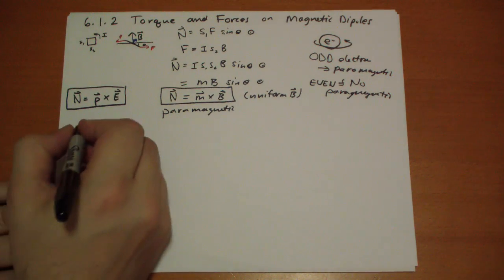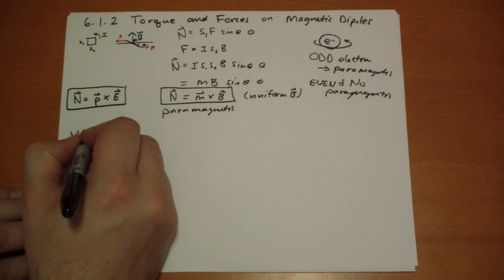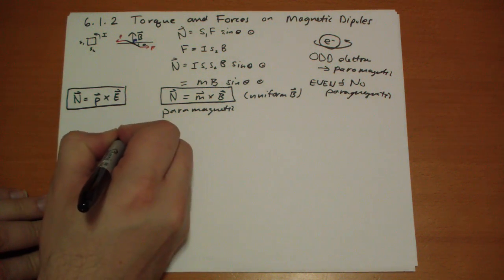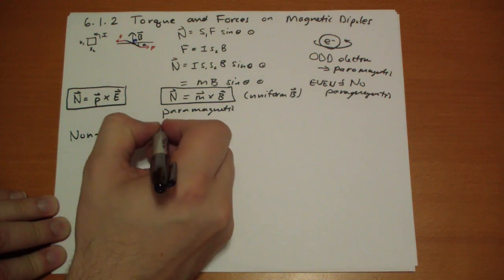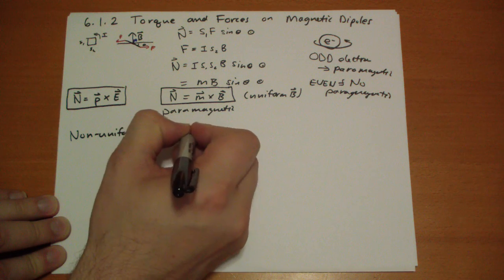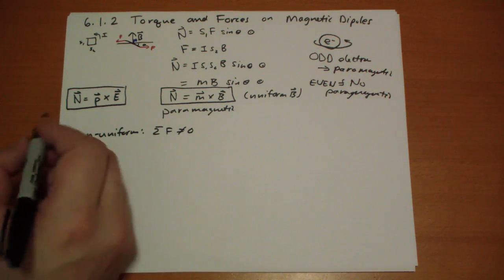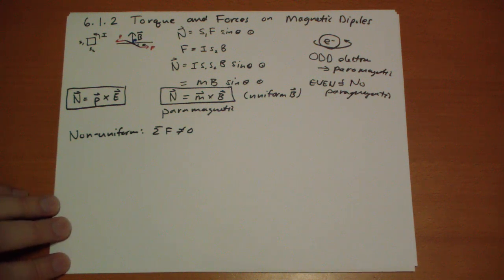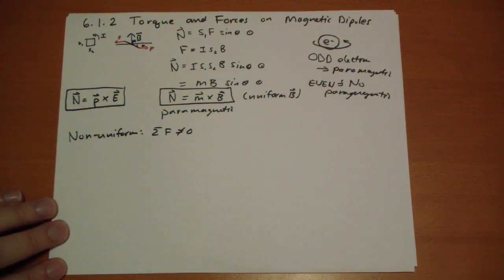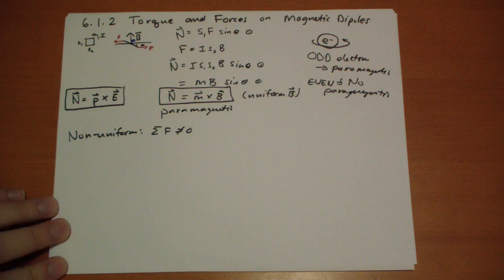Since the field is non-uniform, the sum of the forces is not equal to zero. In uniform fields, the sum of the forces is equal to zero. So in a non-uniform field there's some net acceleration — some pull in one way or the other due to the forces.